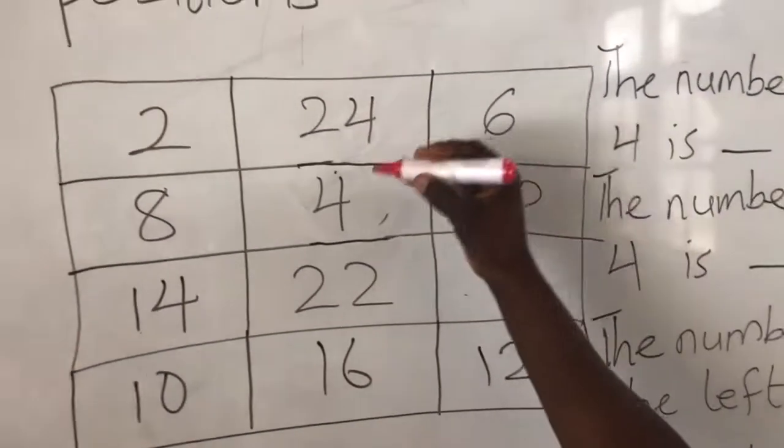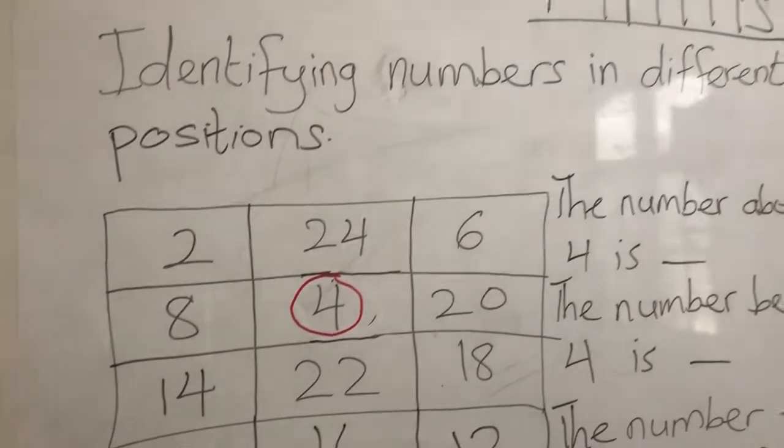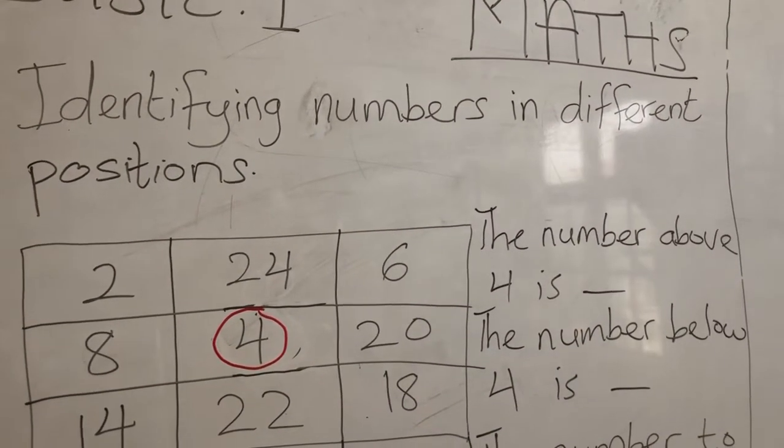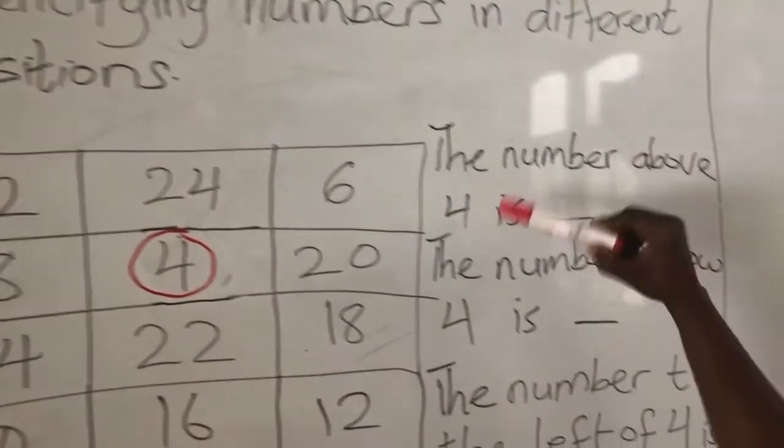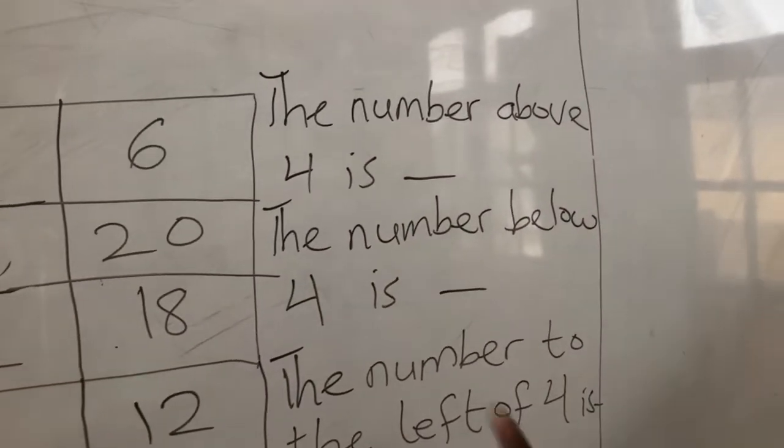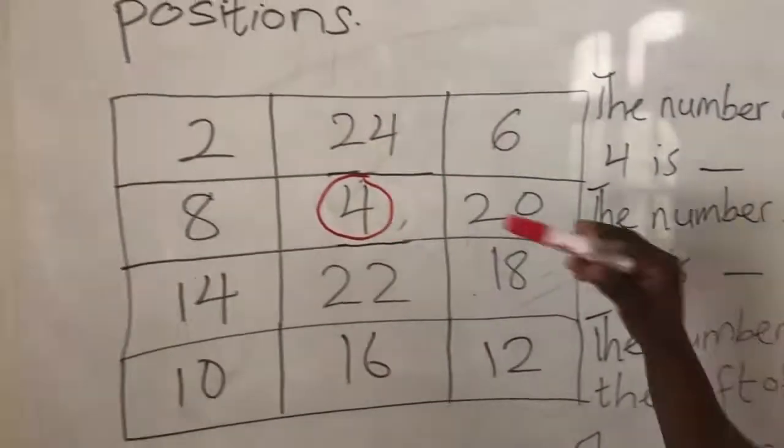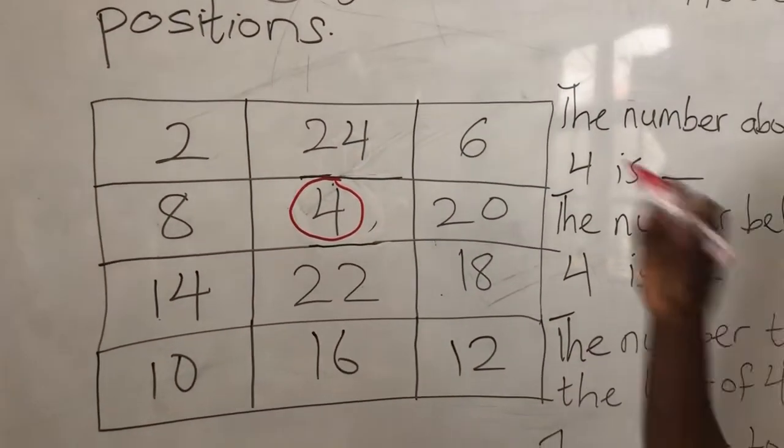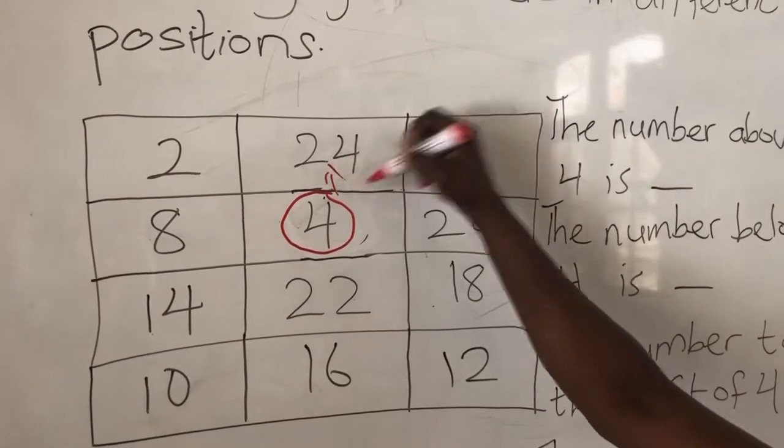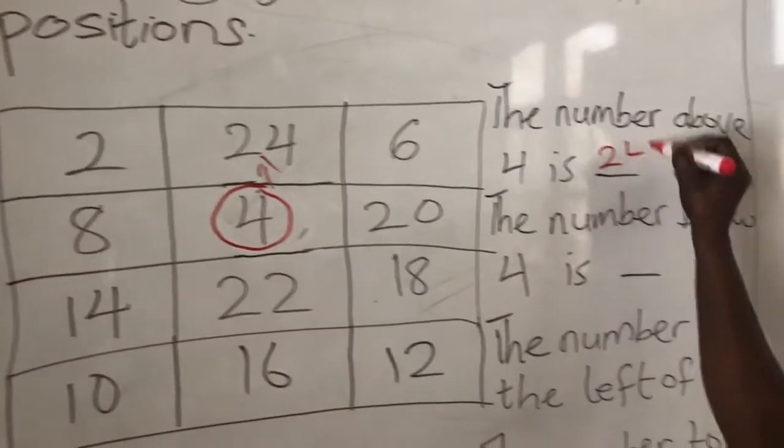Now, if my 4 is settled, and I ask you, the number above 4 is—I always say above, on top of it, above means on top. So, the number above 4 is what? 24. Good.